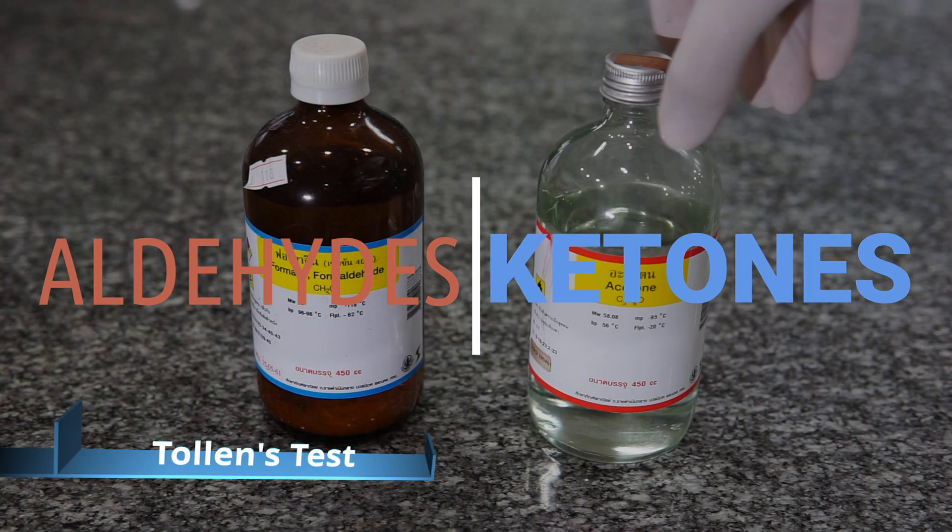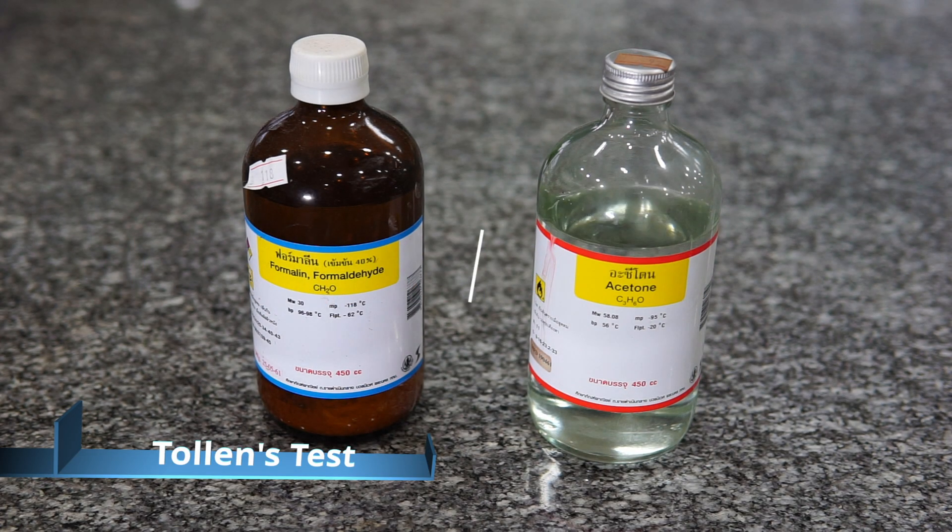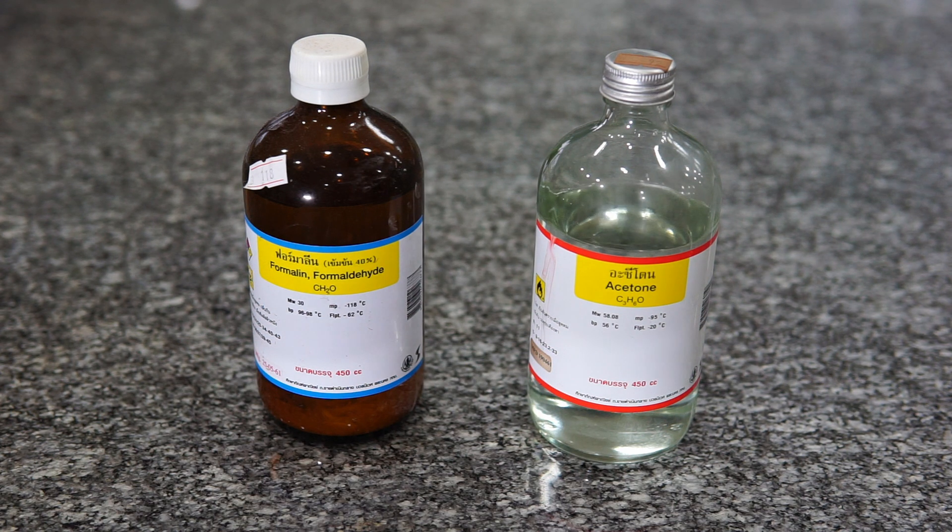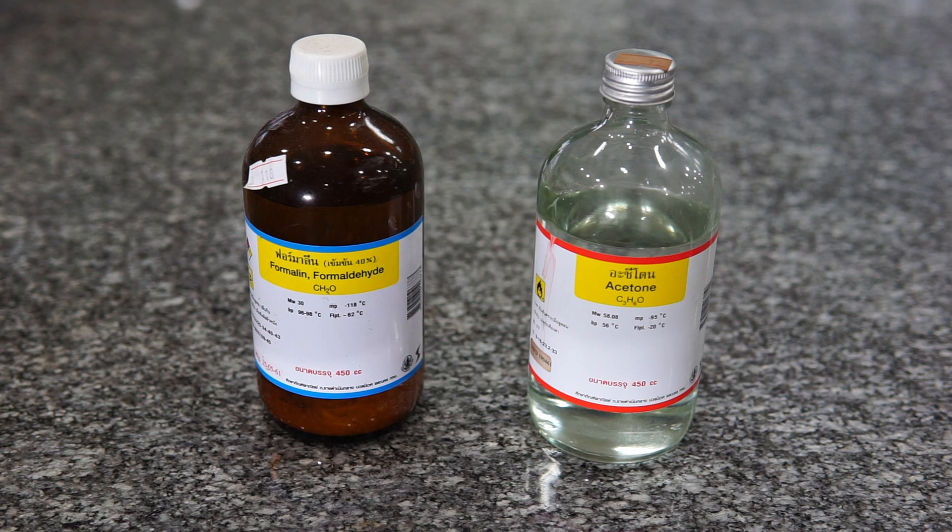Here we have an example of two common compounds. On the left we have formaldehyde, or rather methanol, and on the right we have acetone, otherwise known as propanone. In this video we'll be looking at the test to distinguish between these two types of compounds easily.